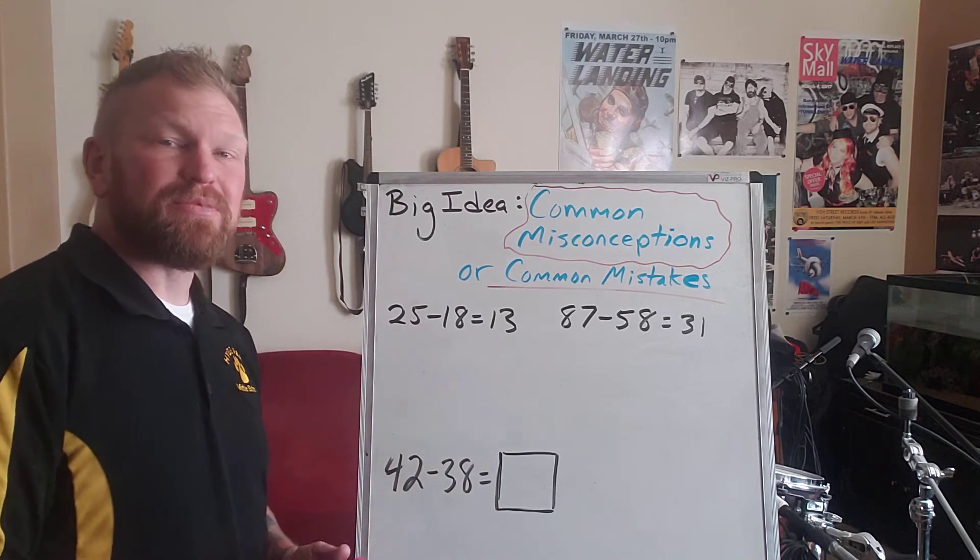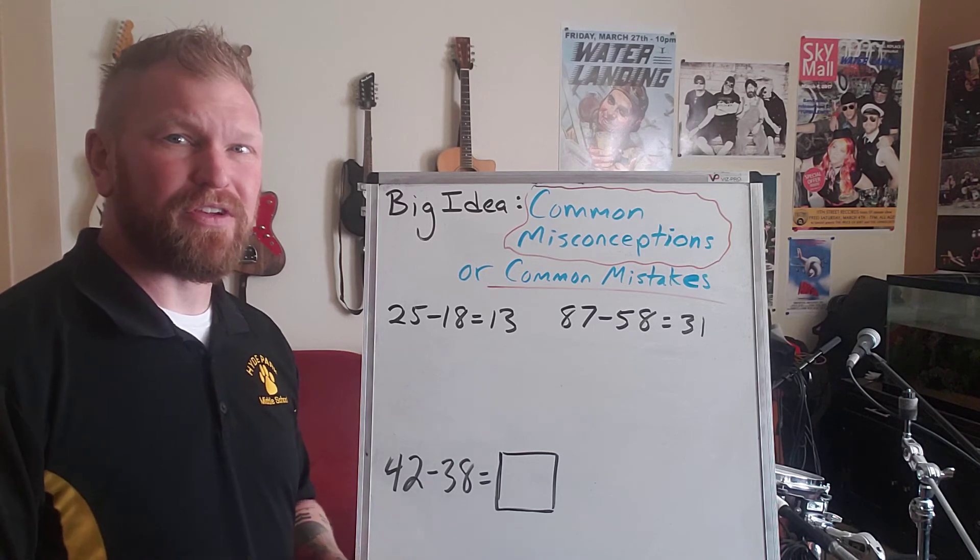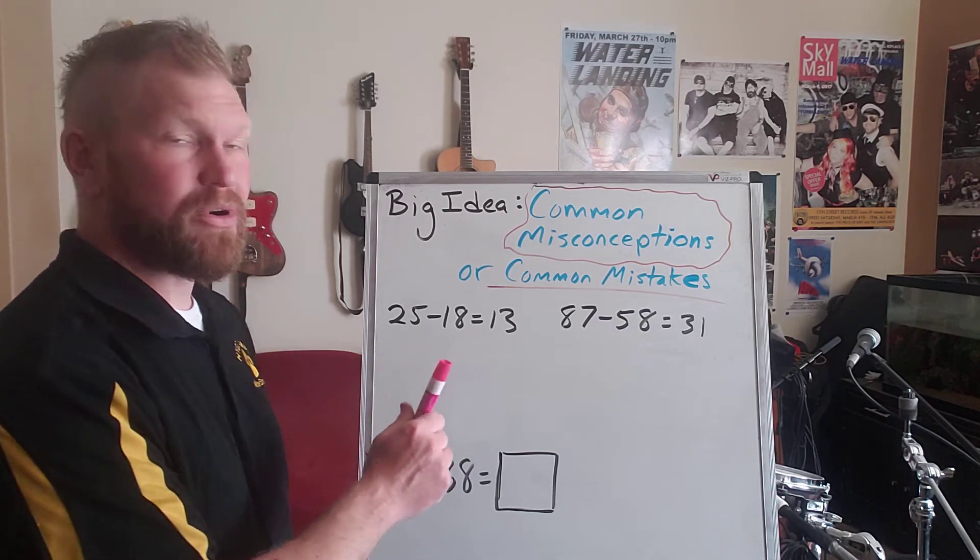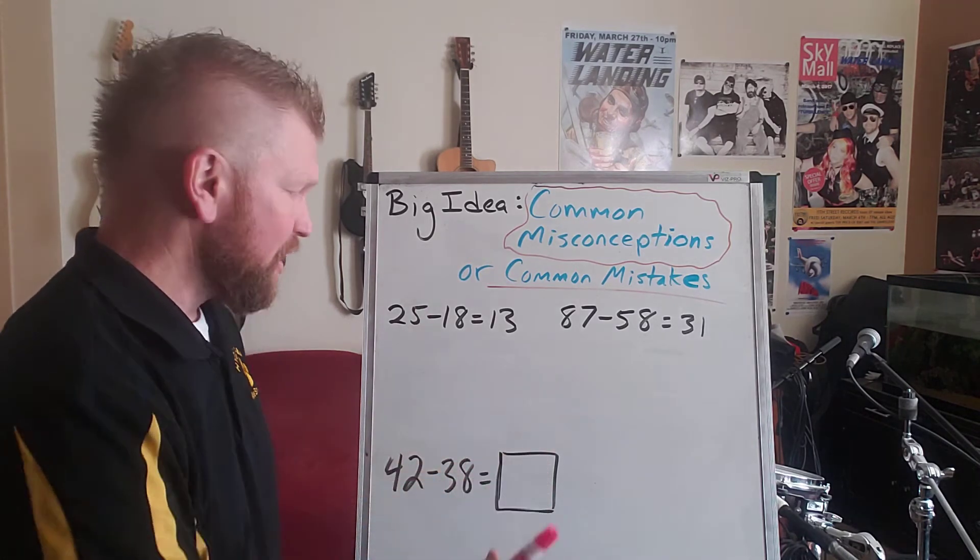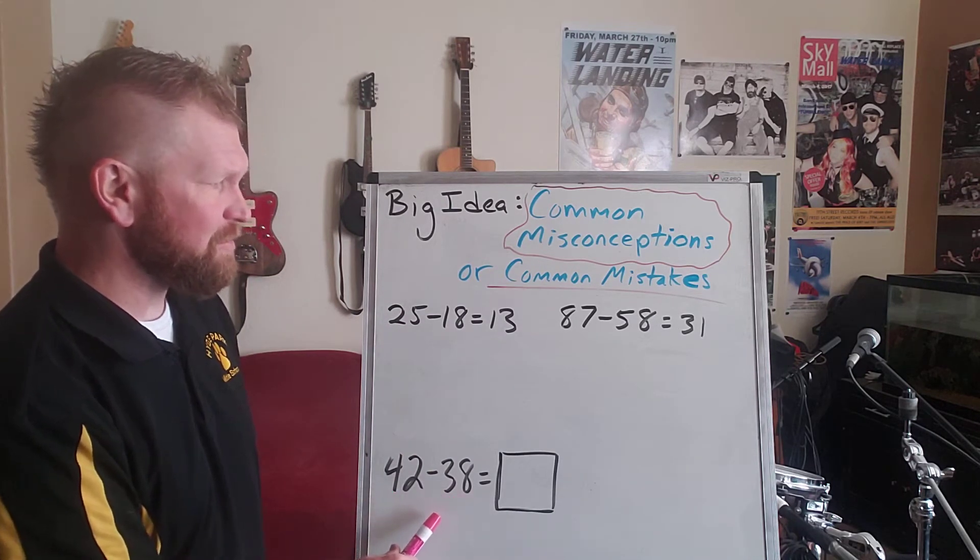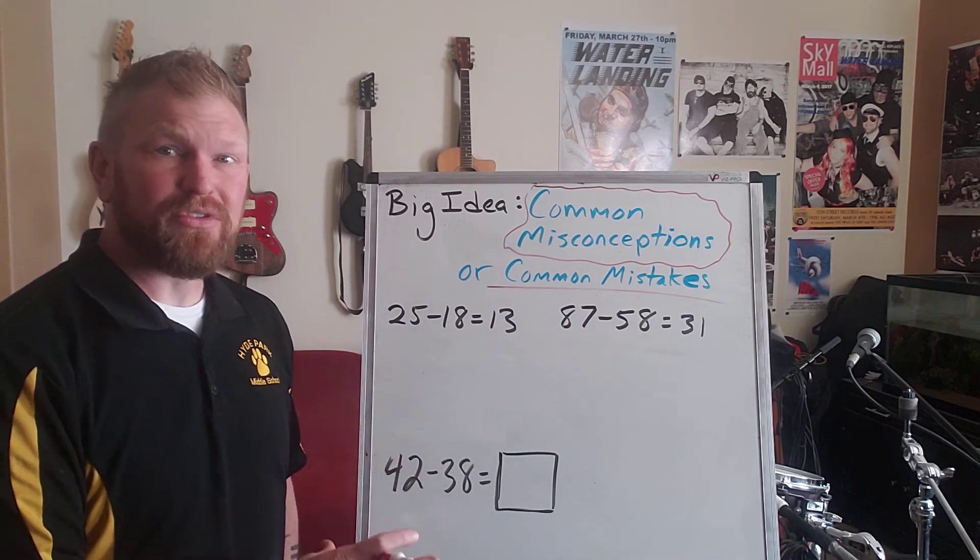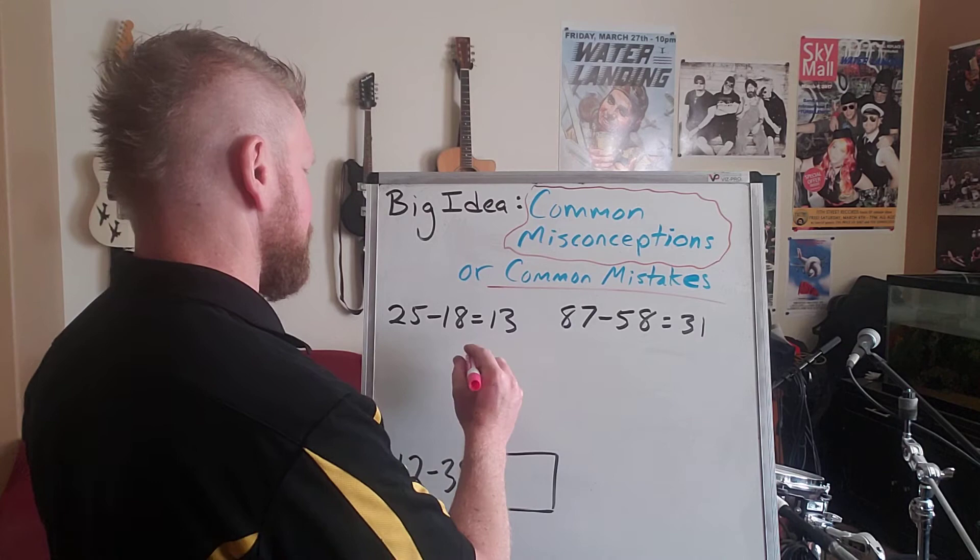Now, maybe you could see the mistake they're making. Maybe you're having trouble finding out what they're doing. Because what we have to do is figure out if they were going to continue to make the same mistake, what would they think that the answer for 42 minus 38 is. If you don't see what their mistake is, try writing it this way.